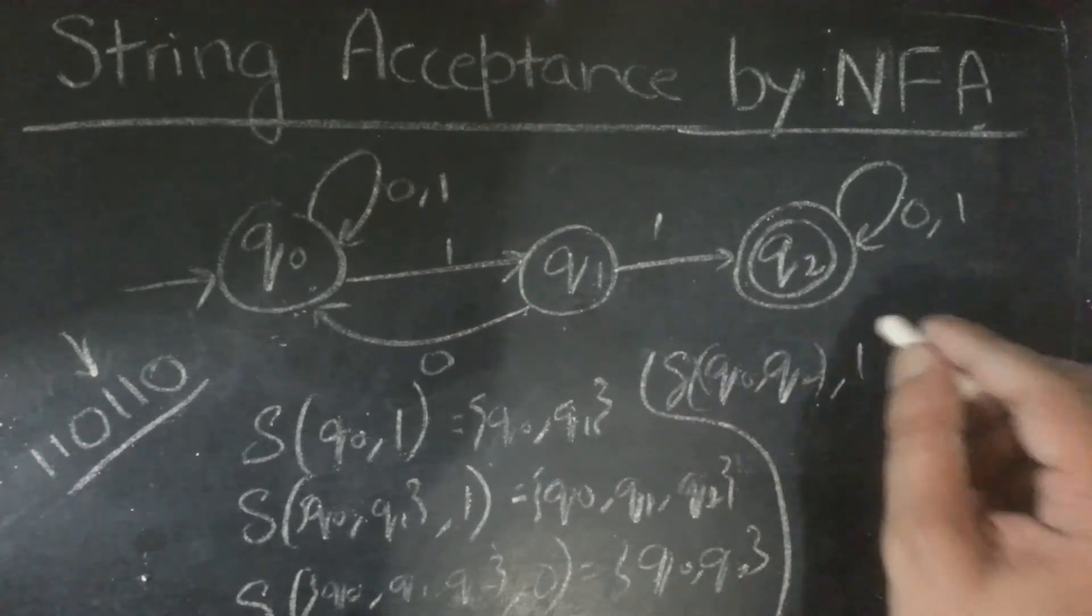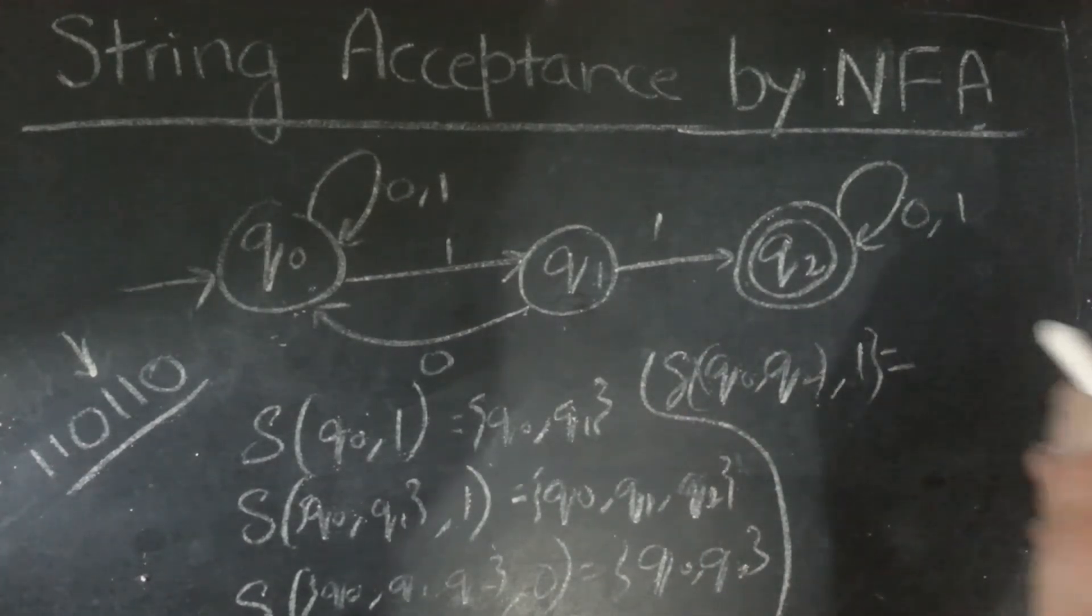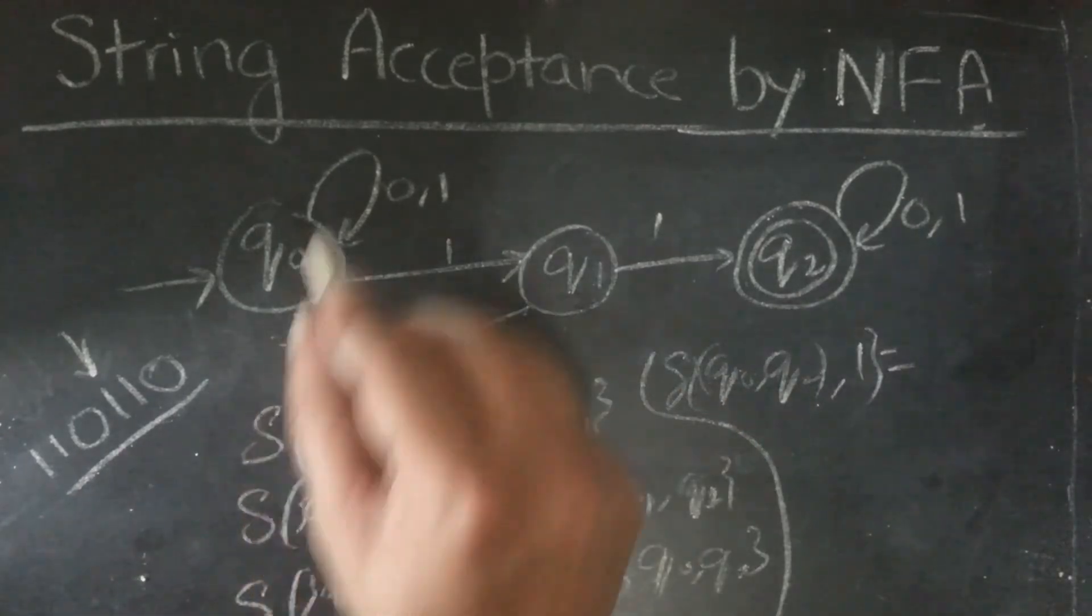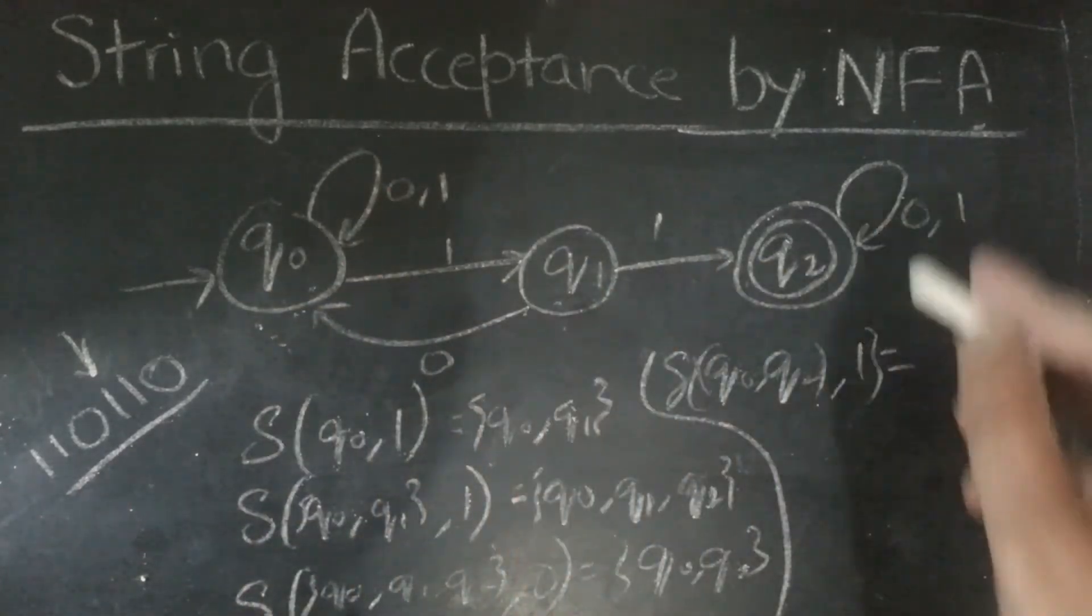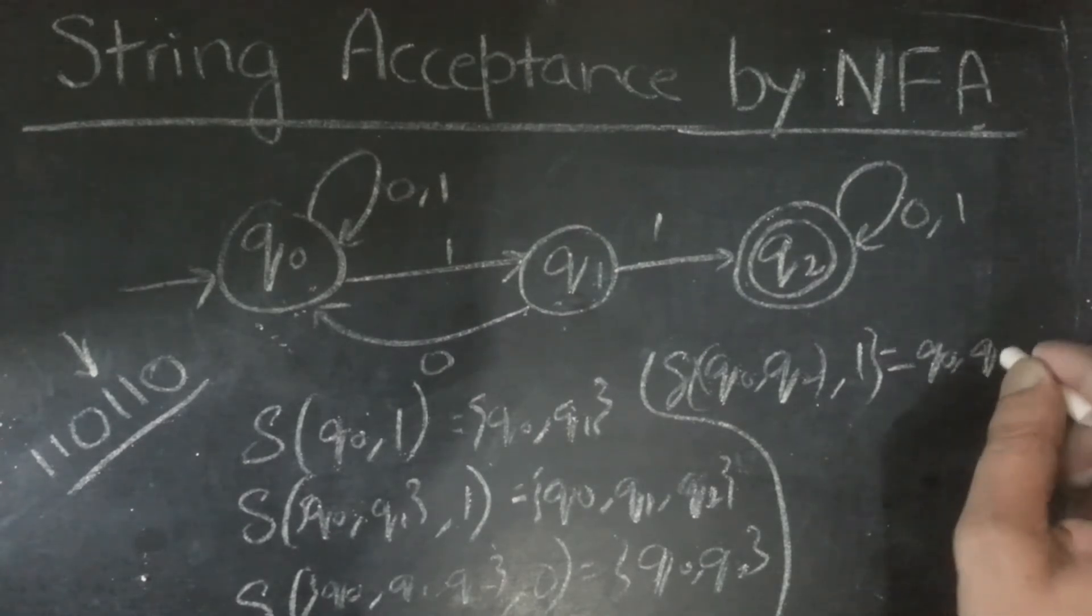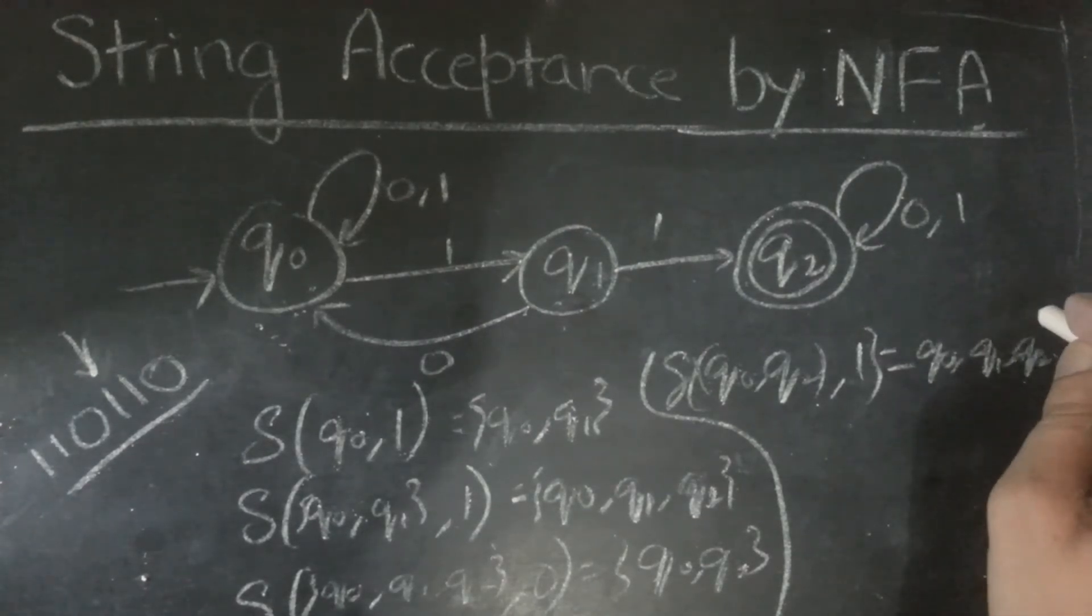Now, on q0, q2, if we give 1, then the answer is on q0, 1 will take us to q0, q1 and on q2, it will take us to q2. So, q0, q1, q2.